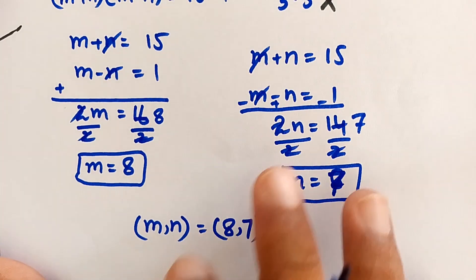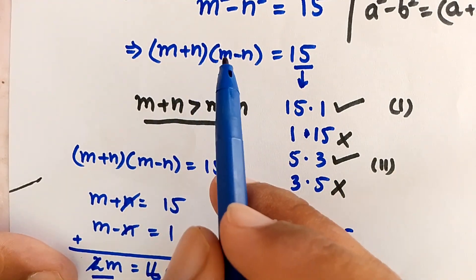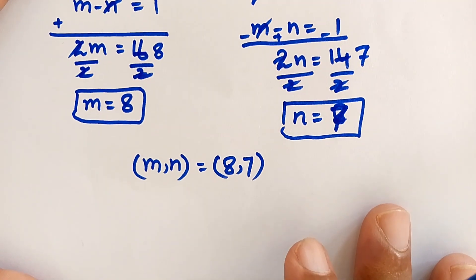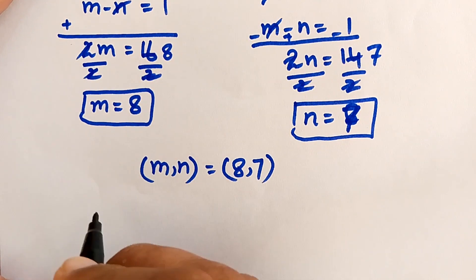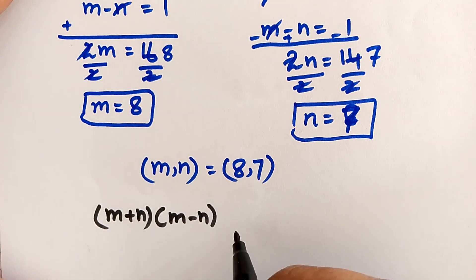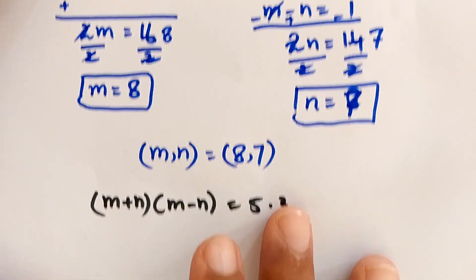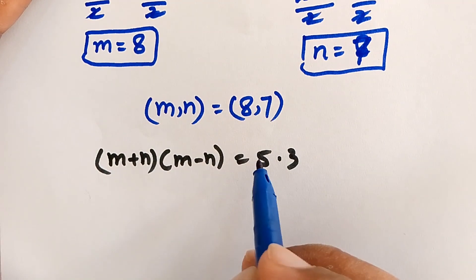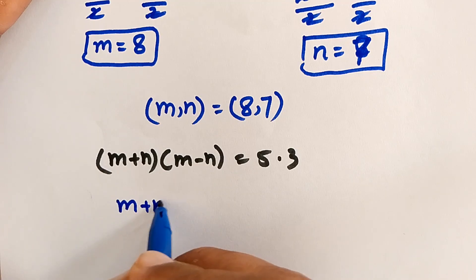Now we solve case number two: m plus n times m minus n equals 5 times 3. From this equation, m plus n is equal to 5 and m minus n is equal to 3.